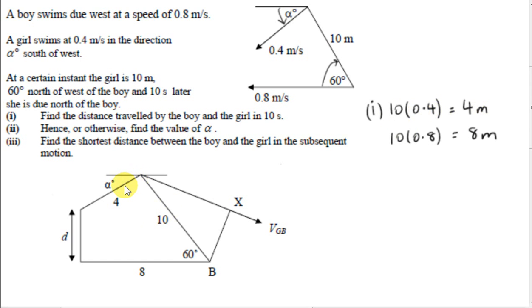So this is the situation after 10 seconds. At t equals 0, the girl is here, and the boy is here. Now here is the picture at t equals 10. We are given that the girl is due north of the boy, so this angle is 90 degrees.